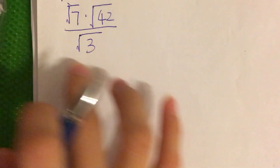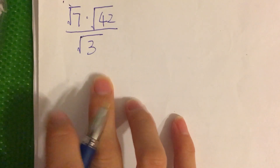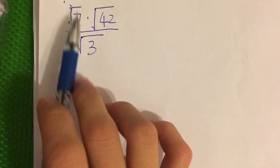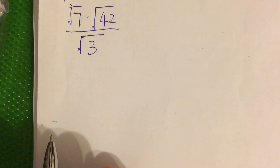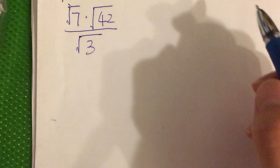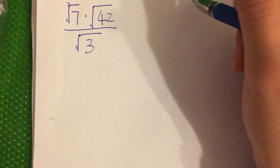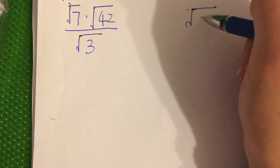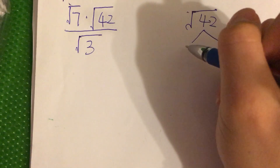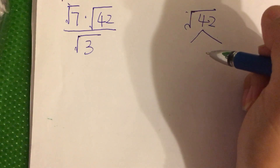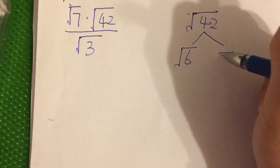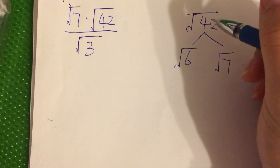Here I ask you to simplify these questions. We see that square root of 7 and square root of 3 is the simplest — we cannot simplify anymore. But square root of 42 is a composite number, so we can separate it. Square root of 42 can be separated into square root of 6 times square root of 7, since 6 times 7 equals 42.